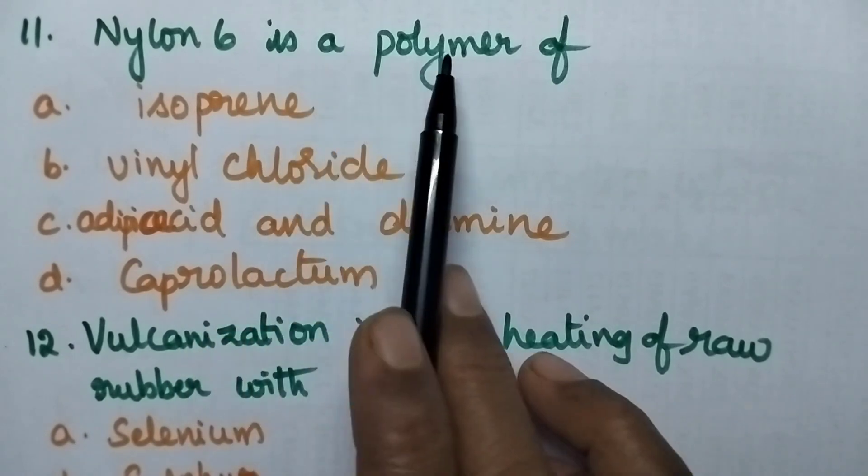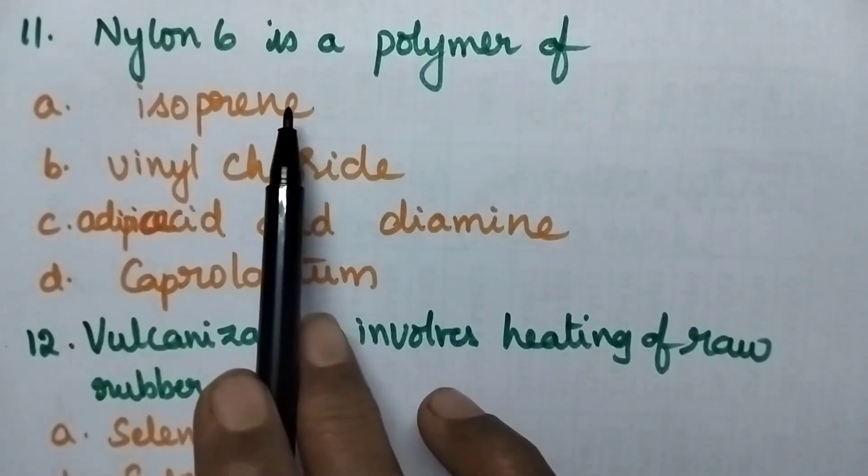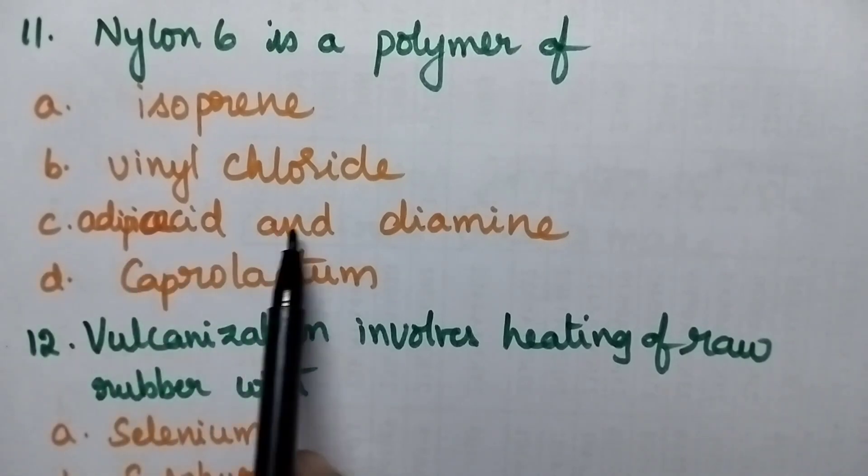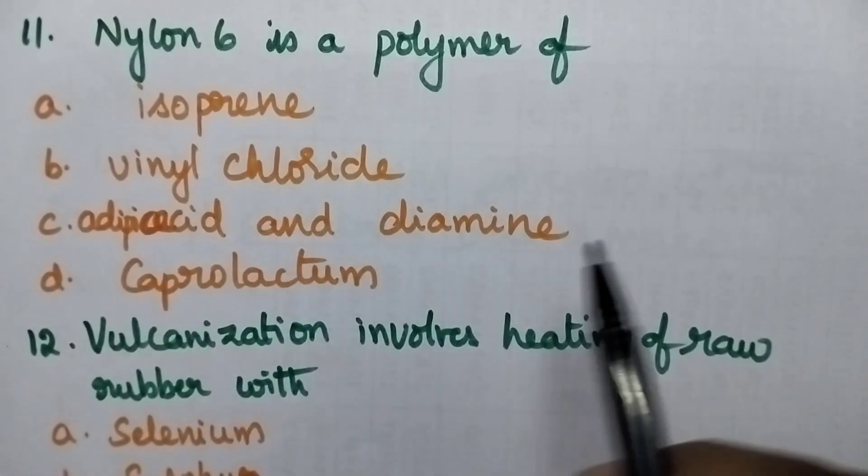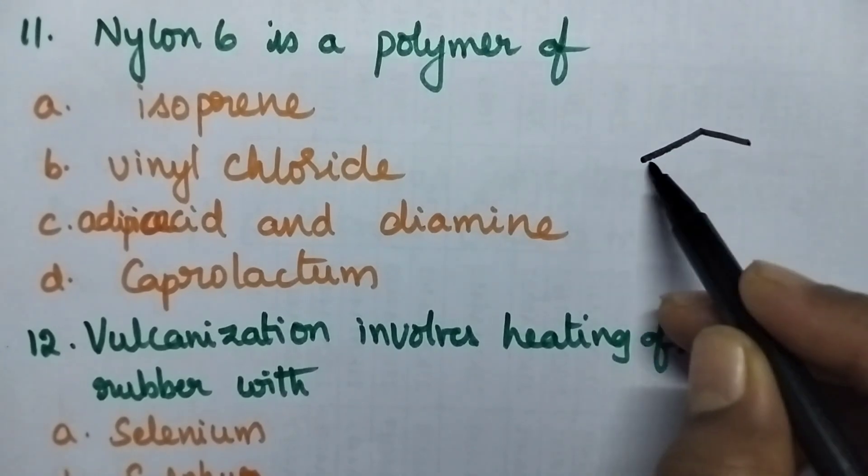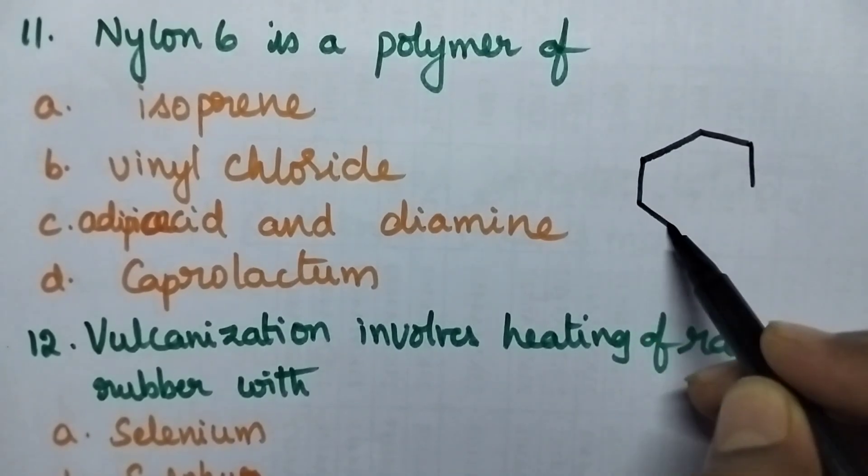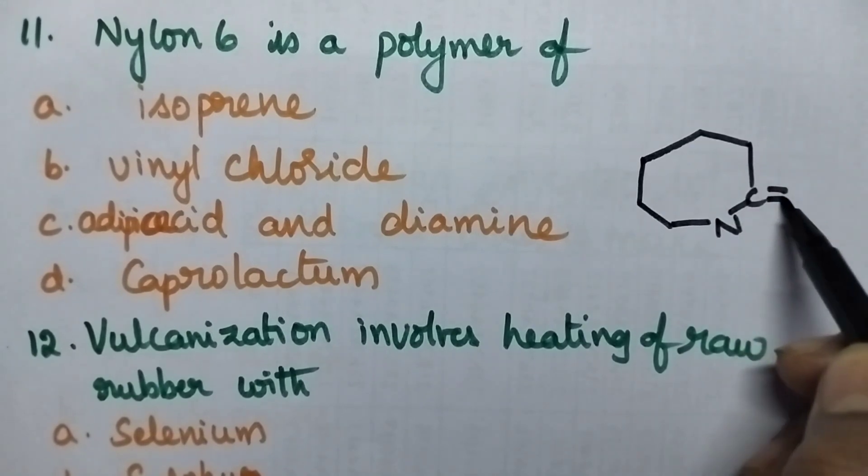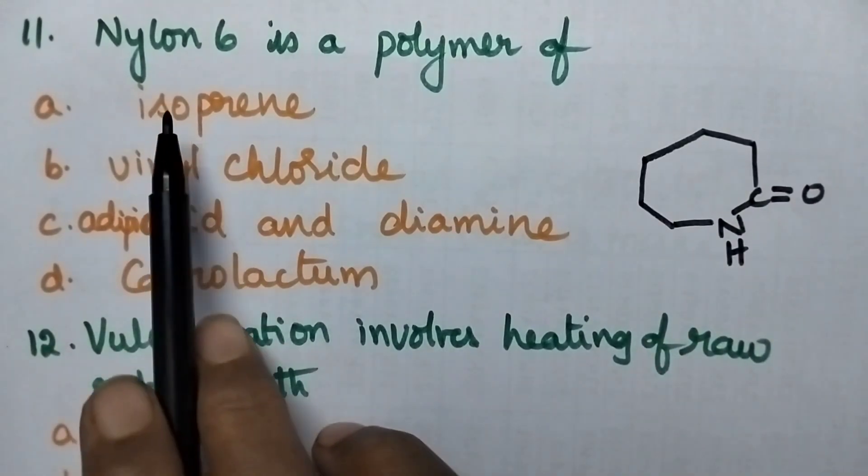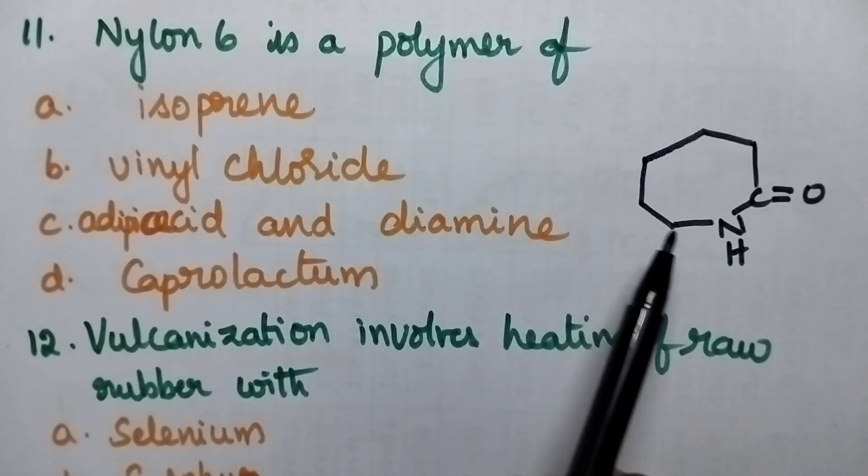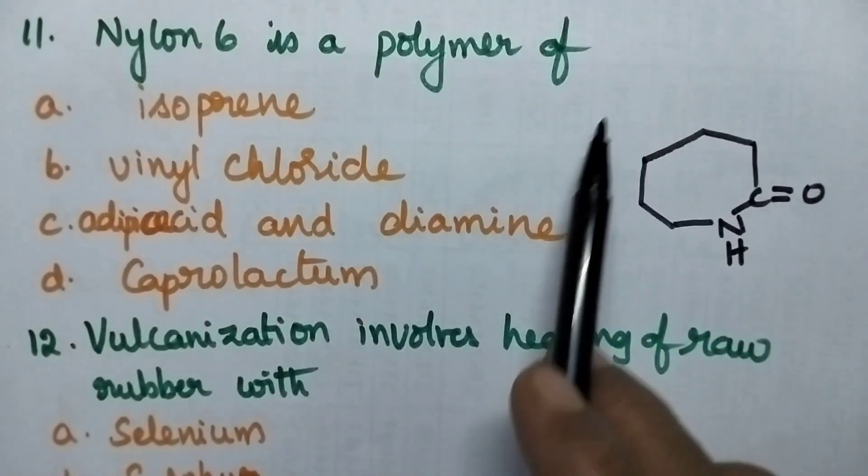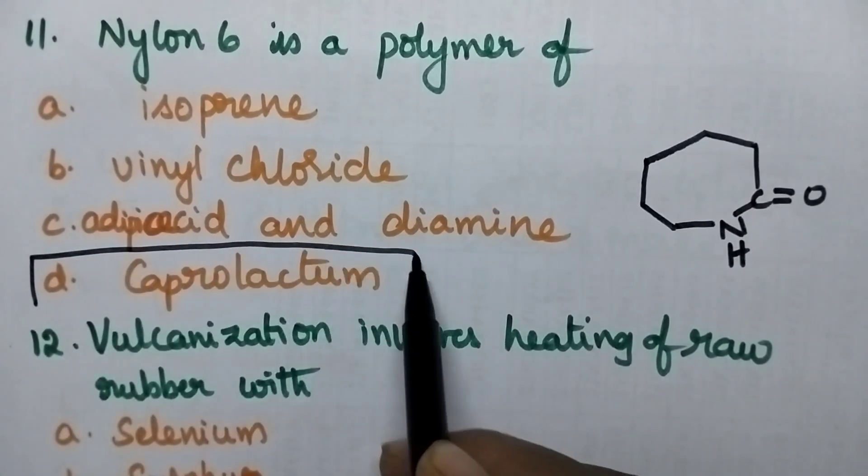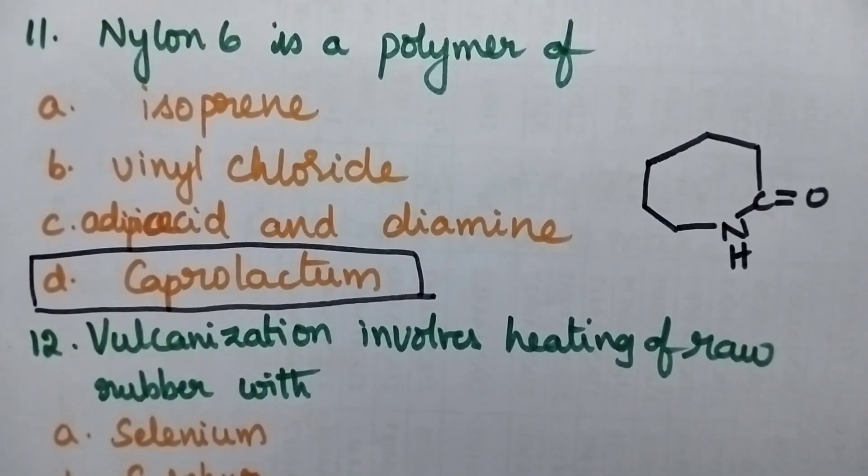Nylon 6 is a polymer of A. Isoprene, B. Vinyl chloride, C. Adipic Acid and Diamine and D. Caprolactam. So nylon 6 can be obtained by the polymerization of Caprolactam. So it is a polymer of Caprolactam. So option D is the right answer.